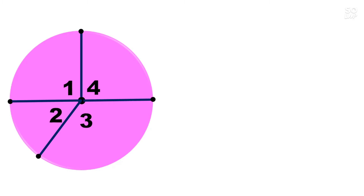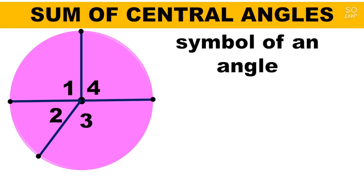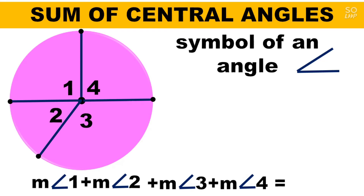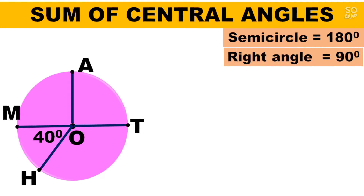Now, we have a circle divided into four parts with angles 1, 2, 3, and 4. The sum of central angles states that the measure of angle 1 plus angle 2 plus angle 3 plus angle 4 equals 360 degrees. So adding all four central angles together gives 360 degrees.